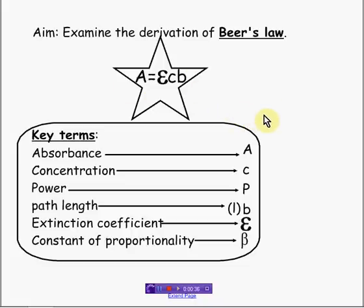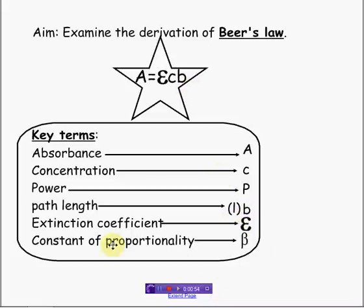Some key terms that you will need to understand are the absorbance, the concentration, the power, and path length. Path length sometimes is denoted as L or B — I'll be using B today. The extinction coefficient — today I'll be using epsilon — and the constant of proportionality.